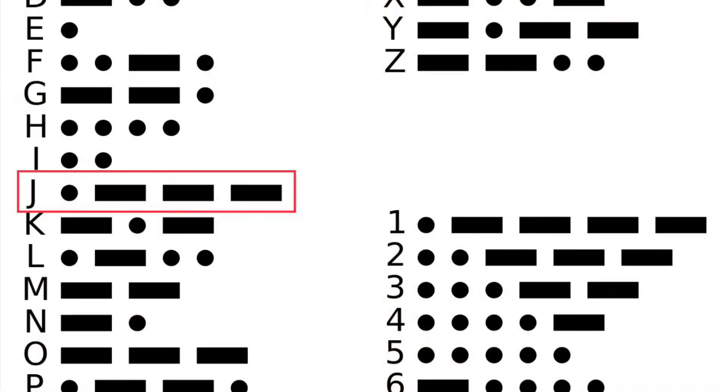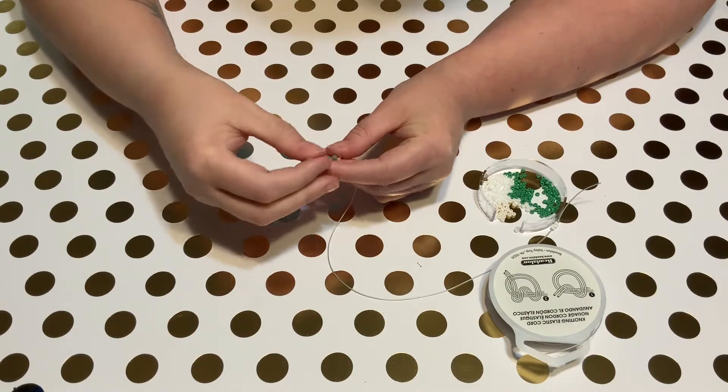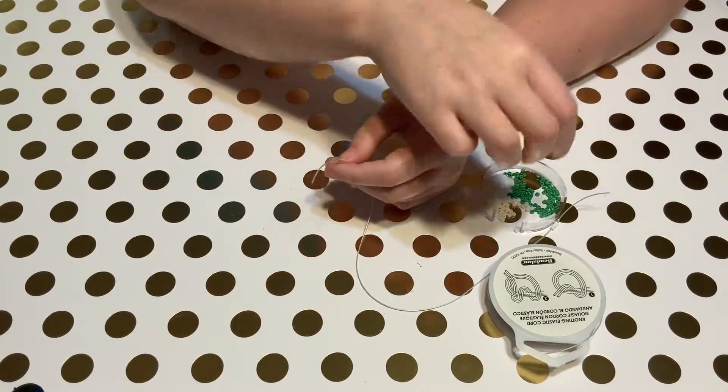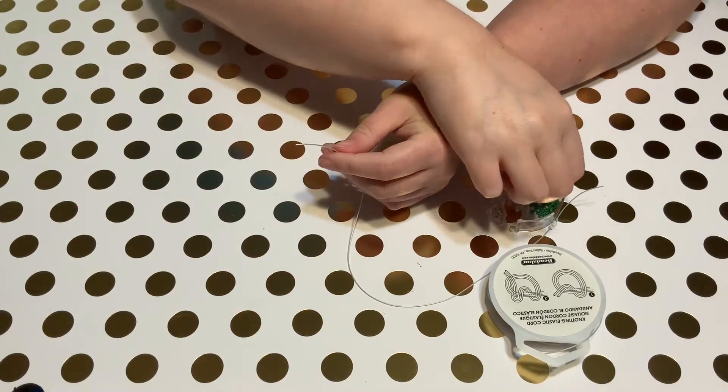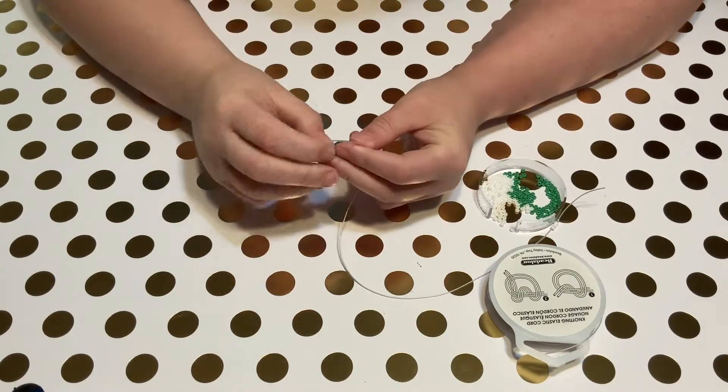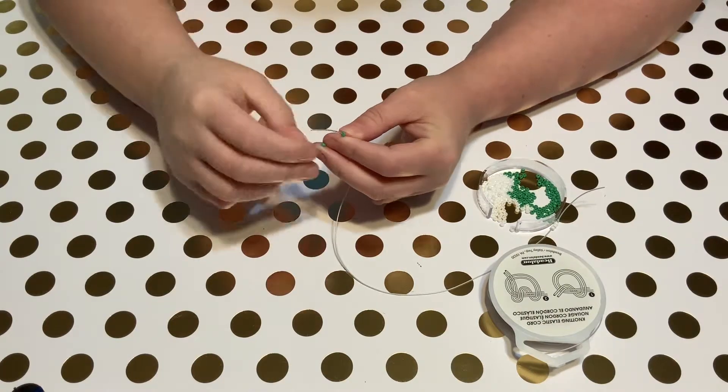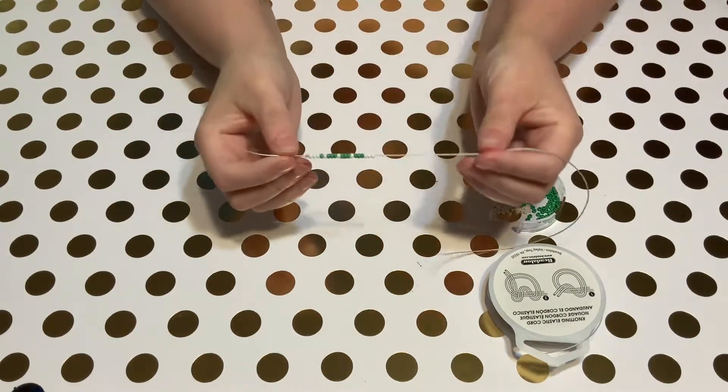I'm next moving on to the first letter of my name, J, which is one dot followed by three dashes, or one unit followed by three groups of three units, each group separated by one unit of white spacer. After I've added all of the beads plus another white three unit spacer, I have my first letter, J.